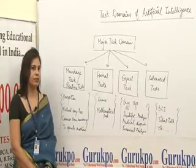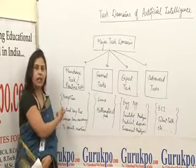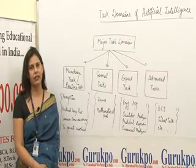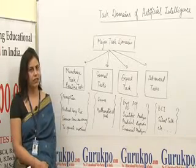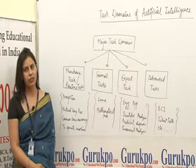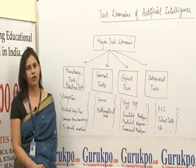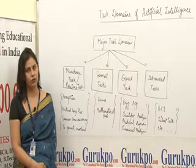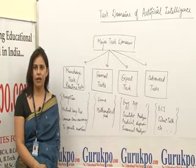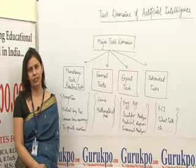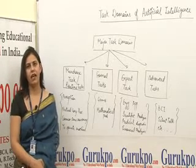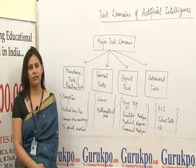The second category of mundane tasks is natural language processing, which involves generation, creation, understanding, and learning of a language. Third is common sense reasoning, which helps determine how, what, and when you are supposed to act. Fourth is how you can operate and control daily automated machines like TVs, washing machines, and other controlling devices.